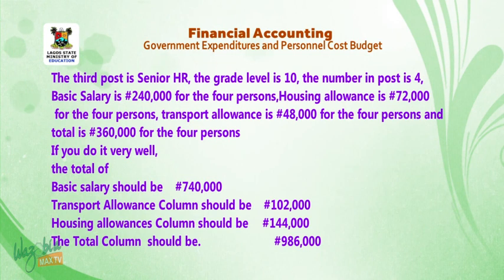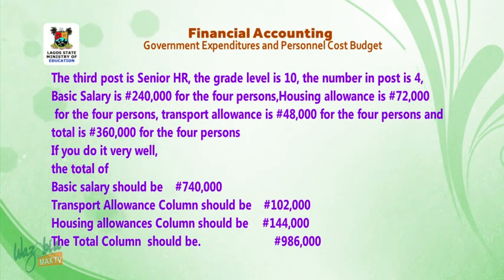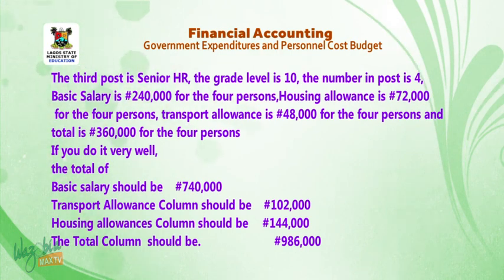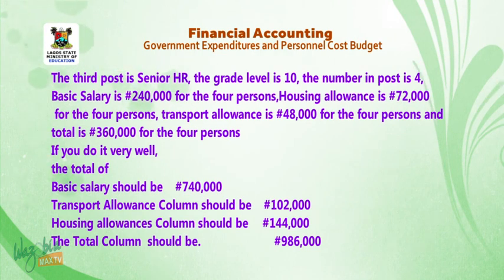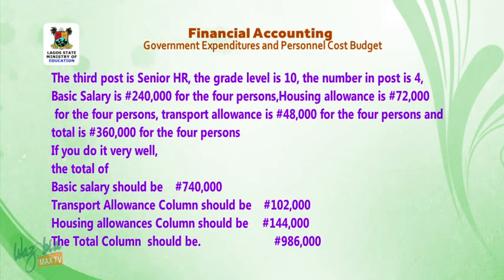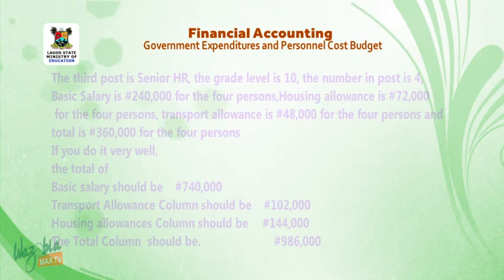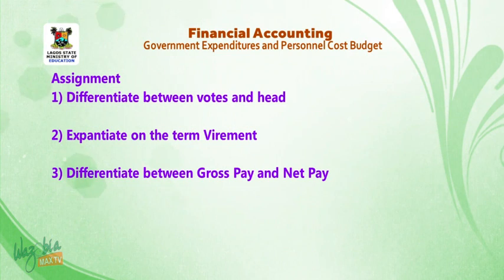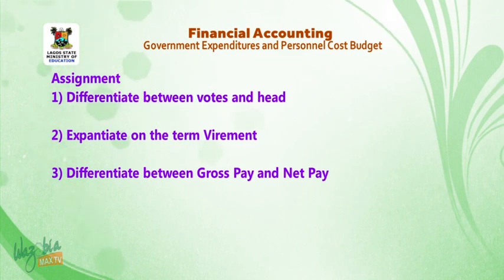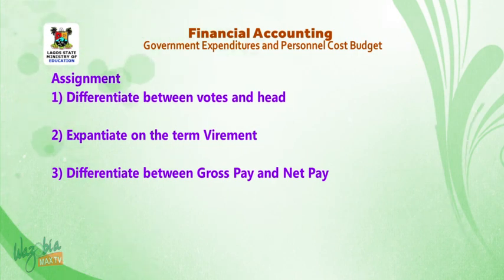The grand totals for the personnel cost budget are: total basic salary — 740,000 Naira; transport allowance column — 102,000 Naira; housing allowance column — 144,000 Naira; and the total column — 986,000 Naira. This is where we stop for today. Assignment: 1. Differentiate between votes and head. 2. Expatiate on the term virement. 3. Differentiate between gross pay and net pay. Thank you for listening.